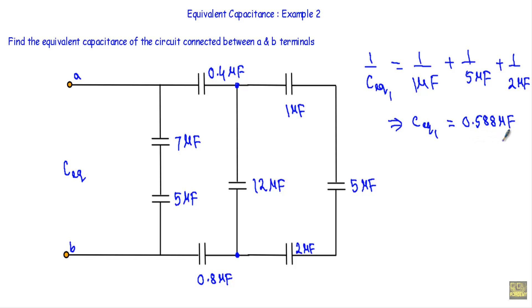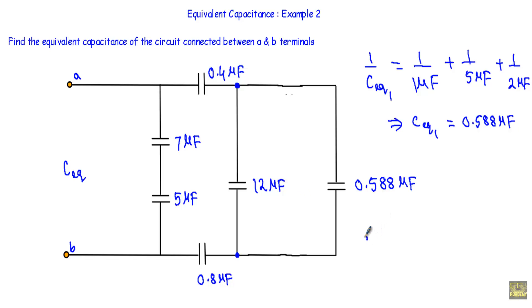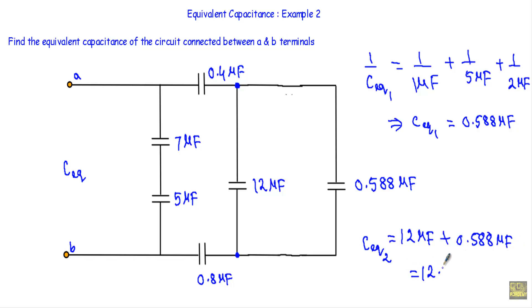Now, with respect to the next pair of terminals, this 12 µF and the 0.588 µF are connected in parallel. I will denote their equivalent capacitance as C_equivalent2. Since they are in parallel, I simply add them: 12 µF + 0.588 µF = 12.588 µF.